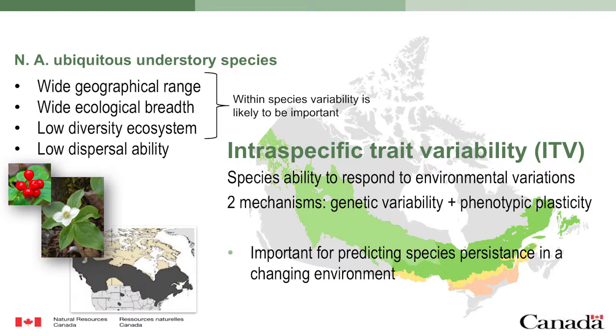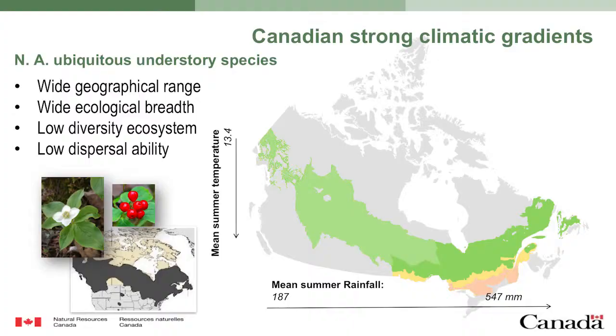This wide ecological breadth means intraspecific variability is likely to be very important. Most of those species also have low dispersal ability, so being in such a wide range, they are really candidates for local adaptation and genetic drift. We thought that was interesting — we are interested to work on this question of intraspecific variability as one important factor to predict species persistence in a changing environment and as a key aspect of species adaptive capacity.